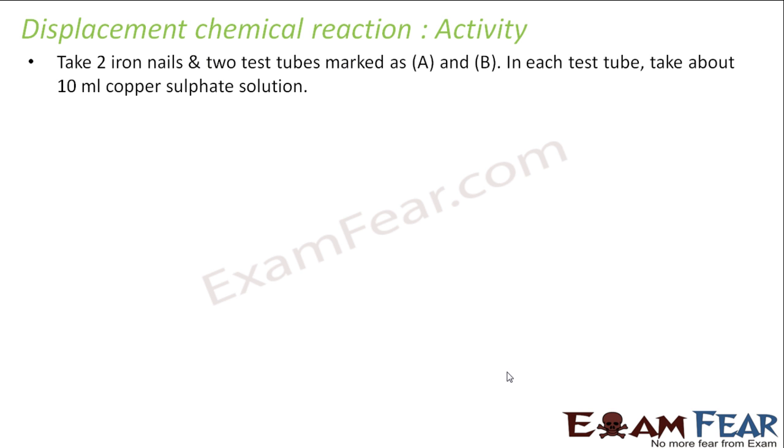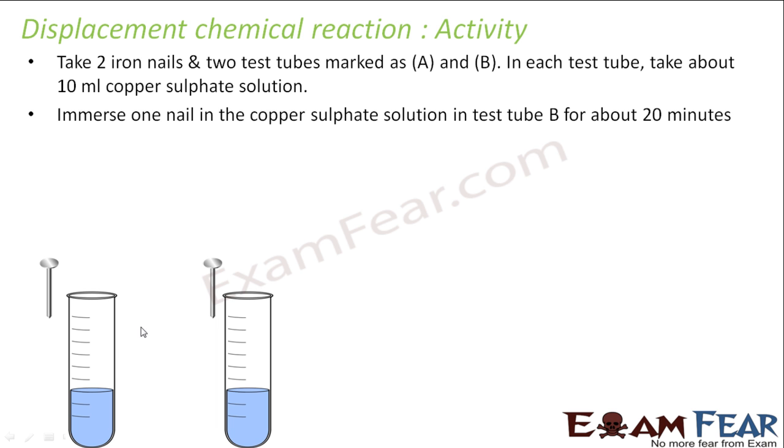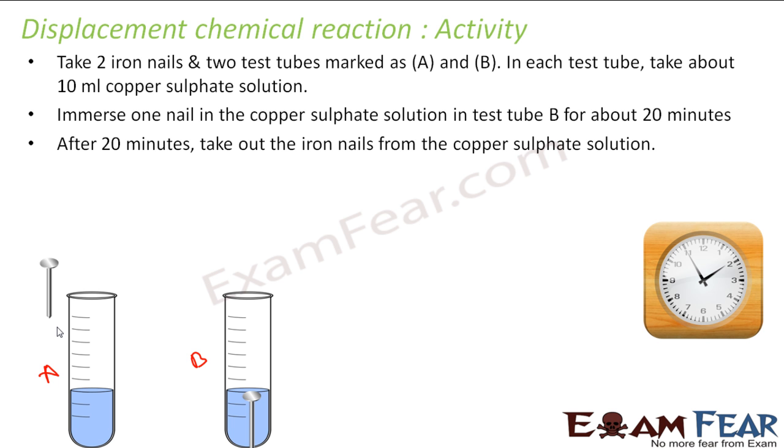Right, so for this we will do an activity. So we will take 2 iron nails and 2 test tubes marked A and B, and in each test tube take 10 ml of copper sulfate solution. So we have 2 iron, 2 test tubes, right, and this guy be A and B and both have copper sulfate solution. Immerse one nail in copper sulfate solution in test tube B for 20 minutes. So in test tube B we will immerse this nail, in test tube A we will not immerse.